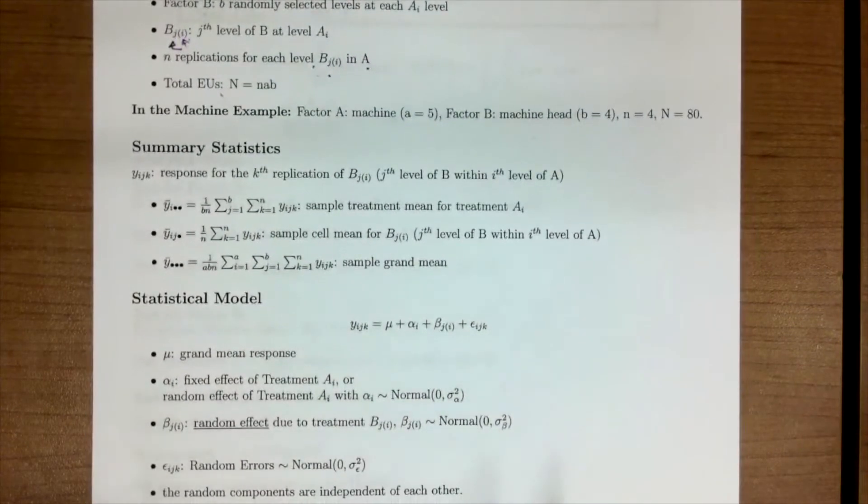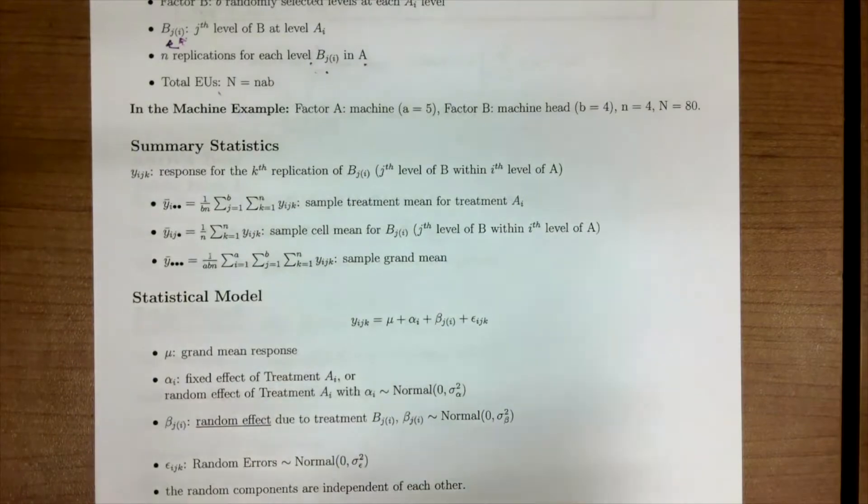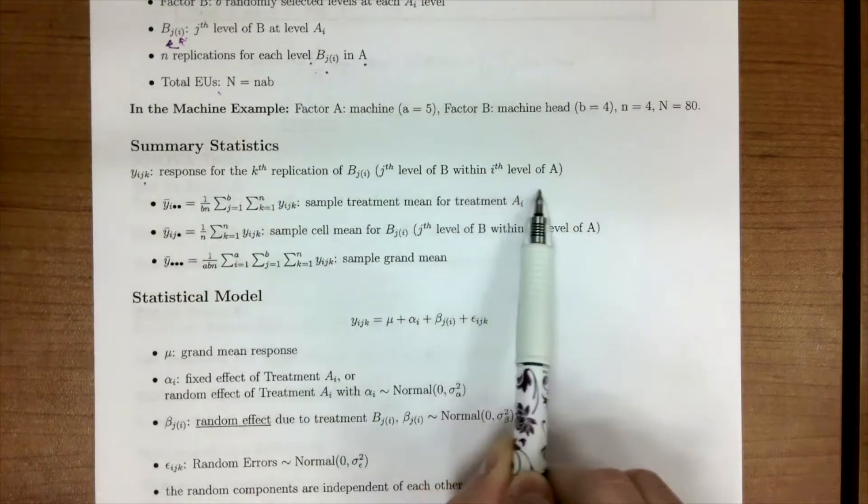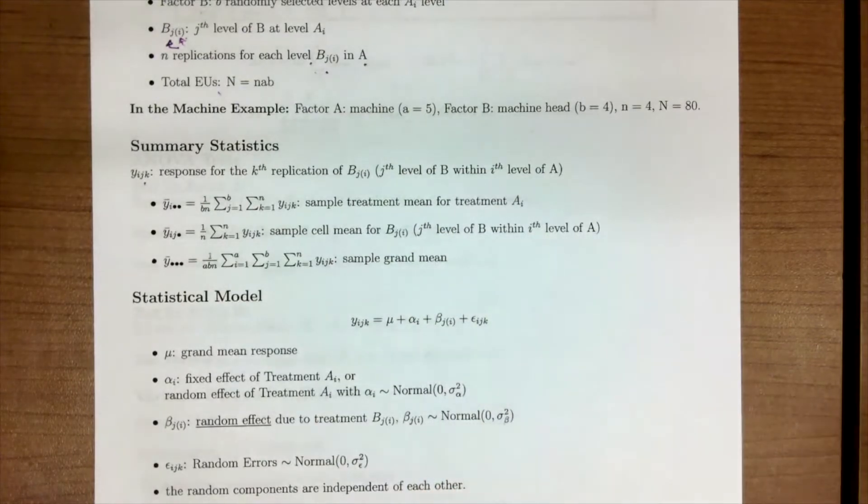Our summary statistics are here, where our Y is i, j, k. i is representing the i-th level in A. j is representing that j-th level, and k is going to represent the replicate of the j-th level within the i-th level of A. Here's some summary statistics for you.